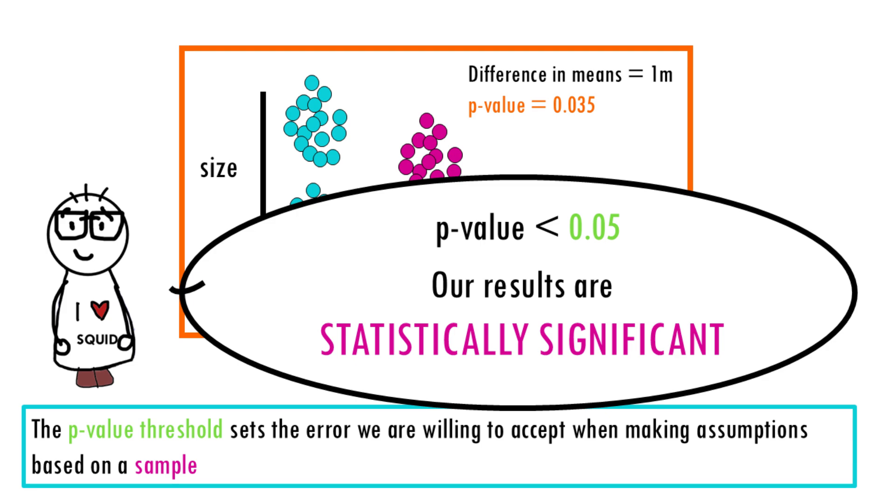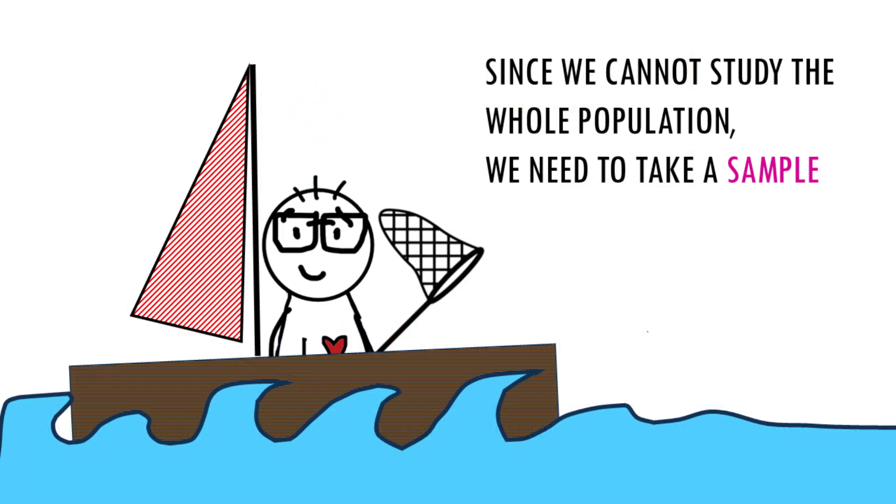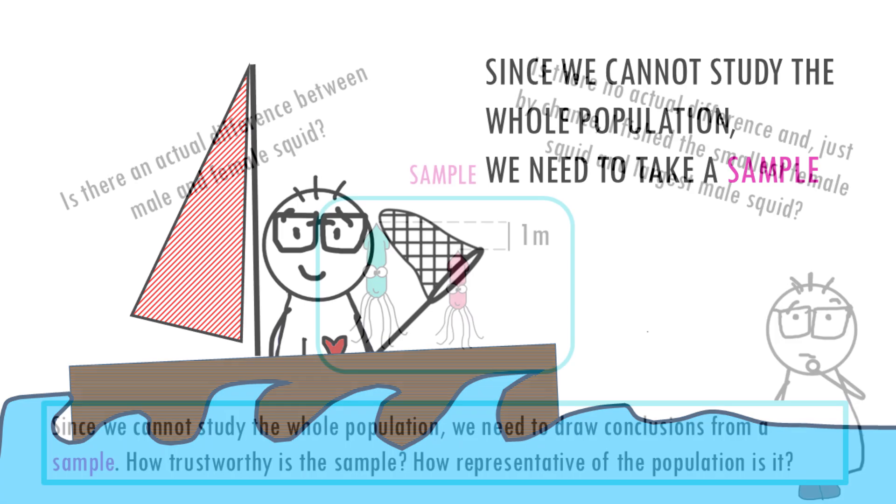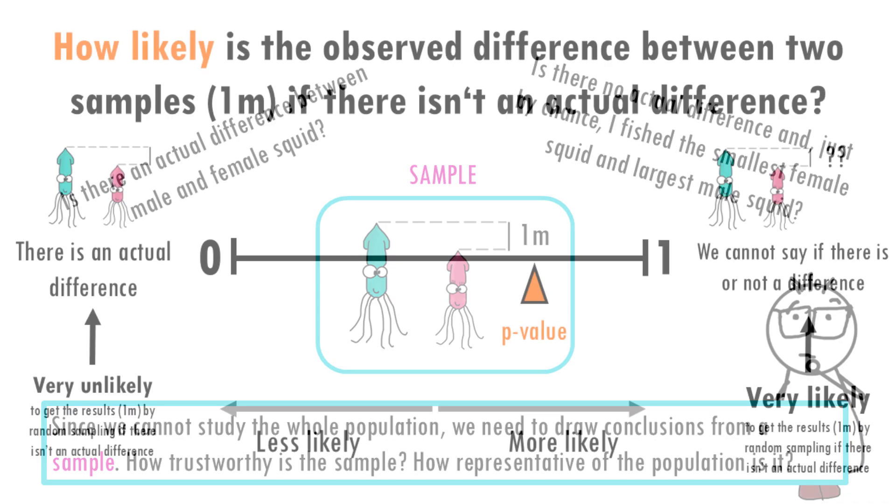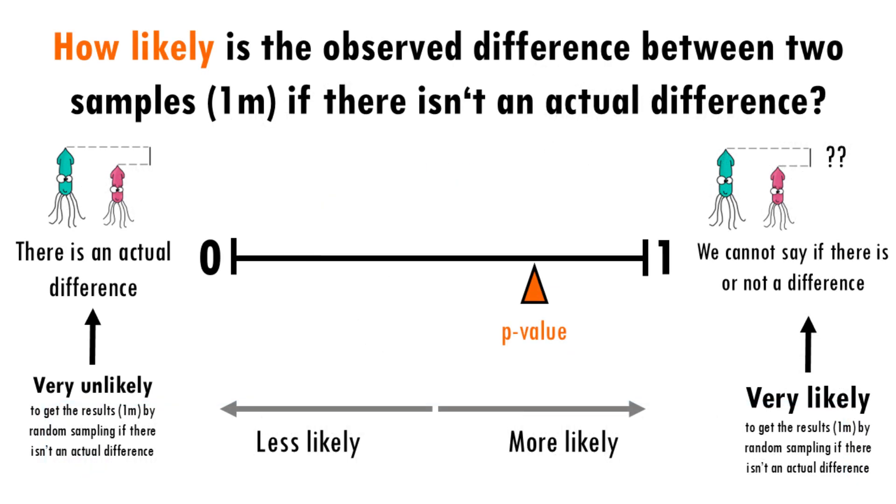In conclusion, since we can't study the entire population of squid and get the real value of the difference in means of sizes between males and females, we make an estimate based on sampling. And since this is only a sample, we then calculate the probability that that estimate is actually representative of the population we are studying.